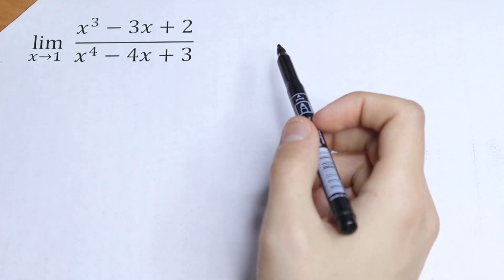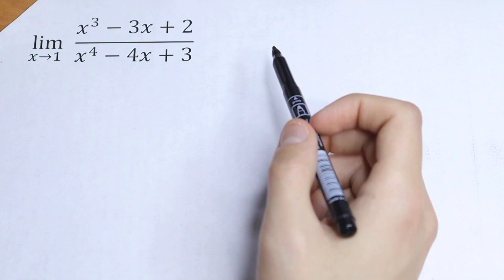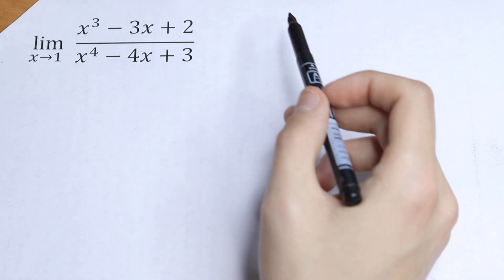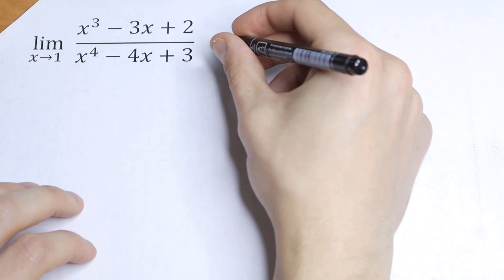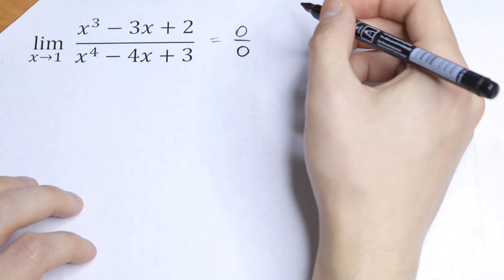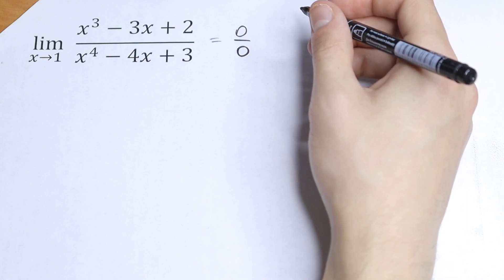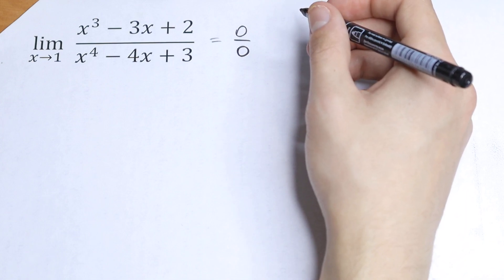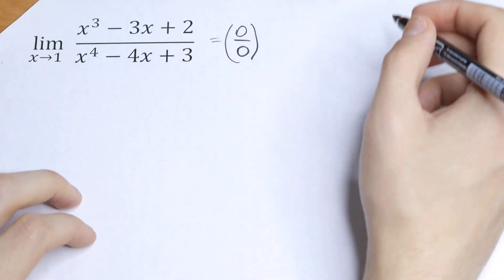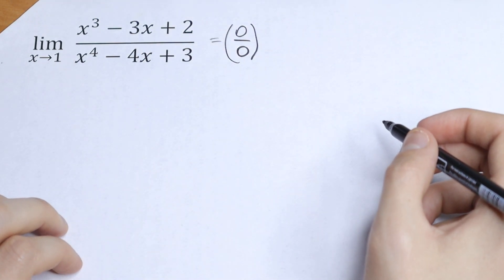Let's use direct substitution — this is the first way to solve this. So we will have 1 minus 3 plus 2, which is 0. And in our denominator we will have the same thing: 1 plus 3 minus 4, which is 0 as well. So we have 0 over 0. As you know, 0 over 0 is undefined, so we don't know what value that represents.